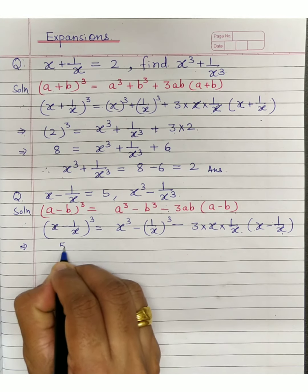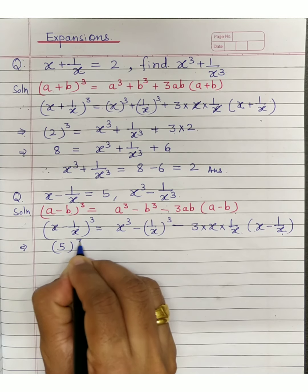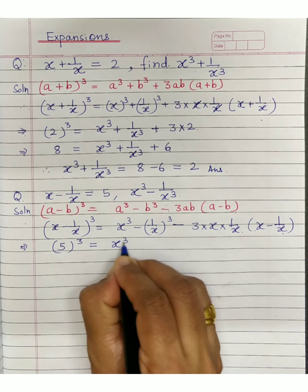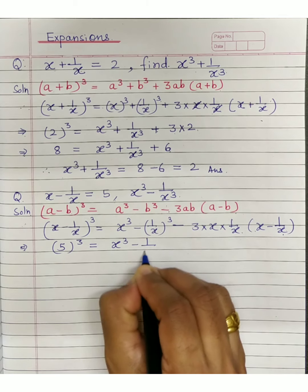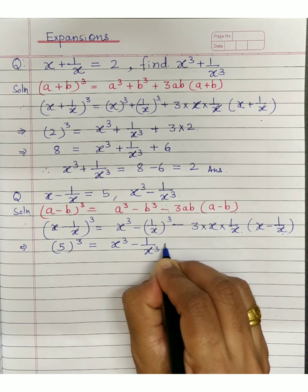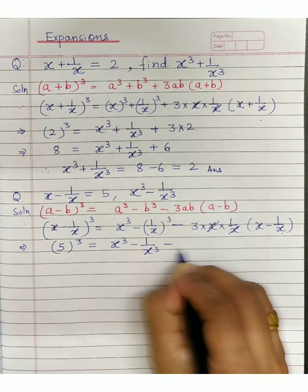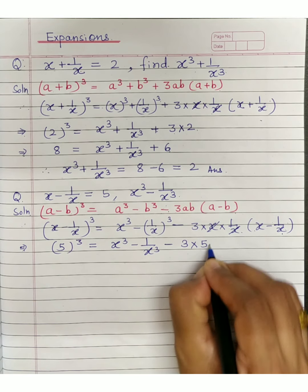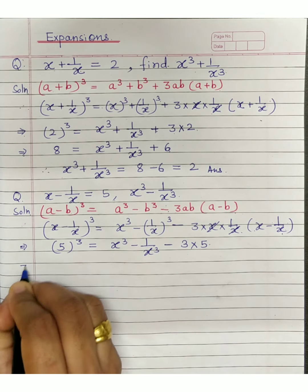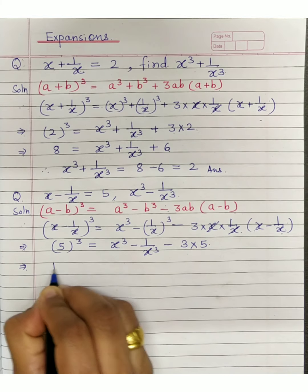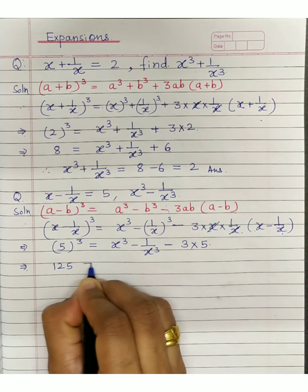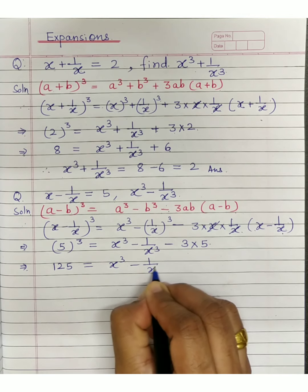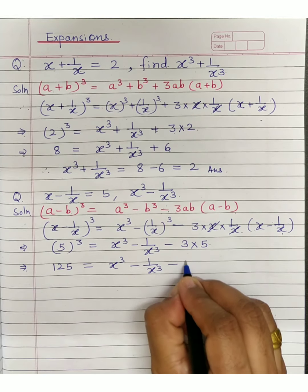Replace x minus 1 upon x with 5. So 5 cube on the left. The expression becomes: x cube minus 1 upon x cube, minus 3 into x minus 1 upon x, which is again 5.